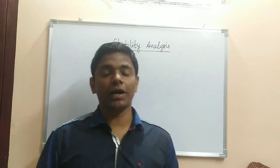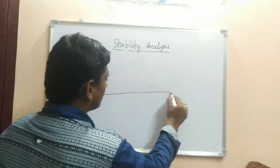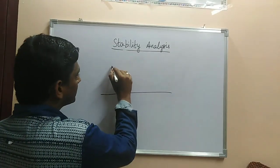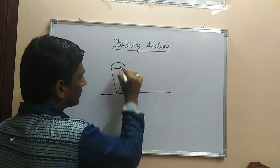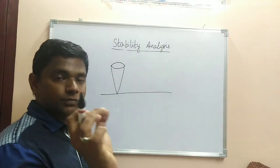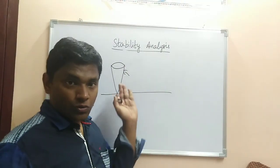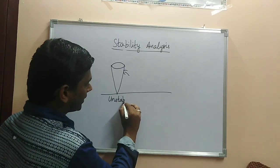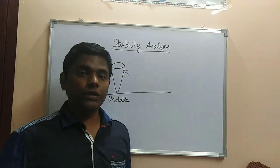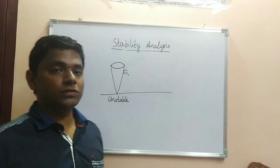For example, there are three types of equilibrium: stable equilibrium, unstable equilibrium, and neutral equilibrium. Consider a cone kept on its tip on a surface — if you apply a small amount of force on this cone, it falls down to the floor. This equilibrium is called unstable equilibrium.